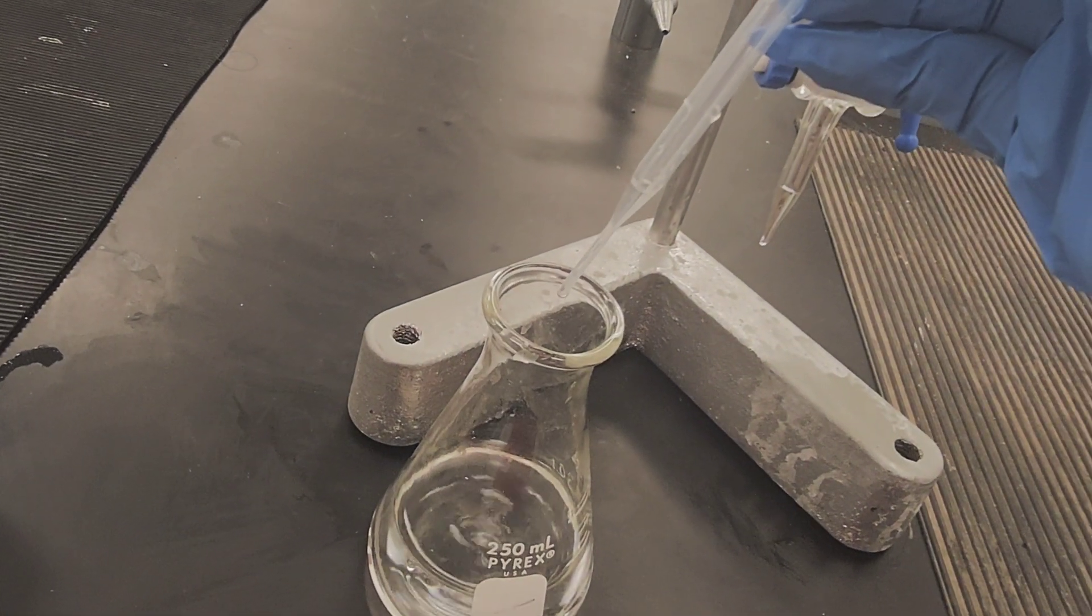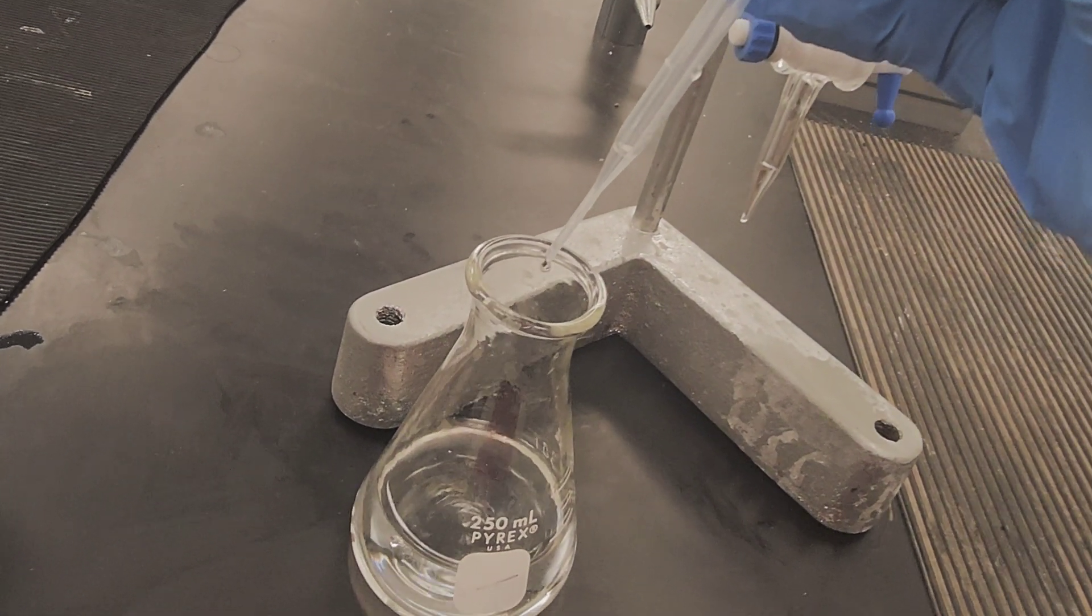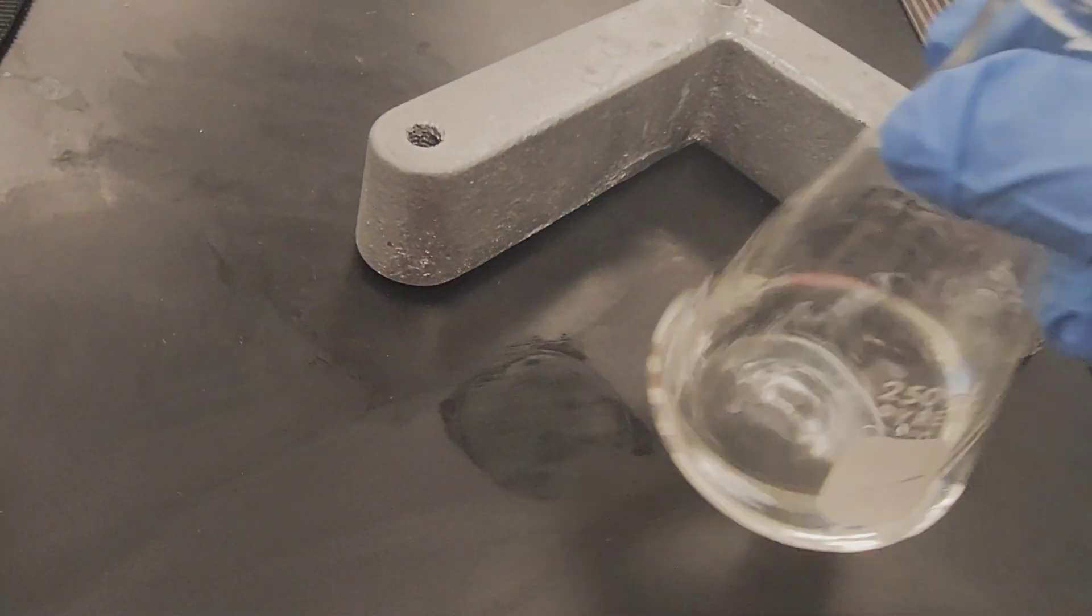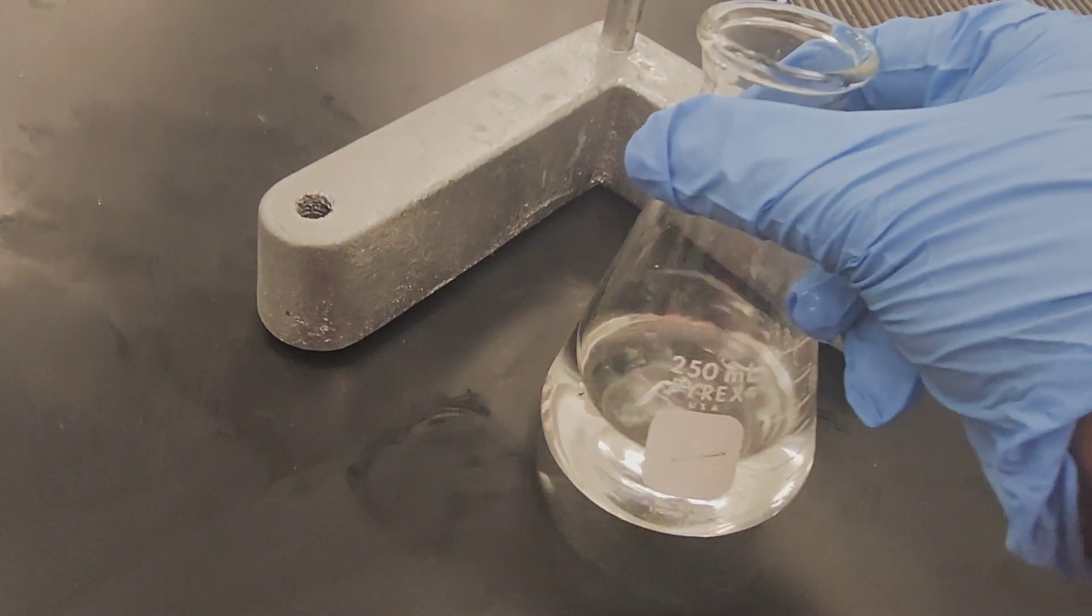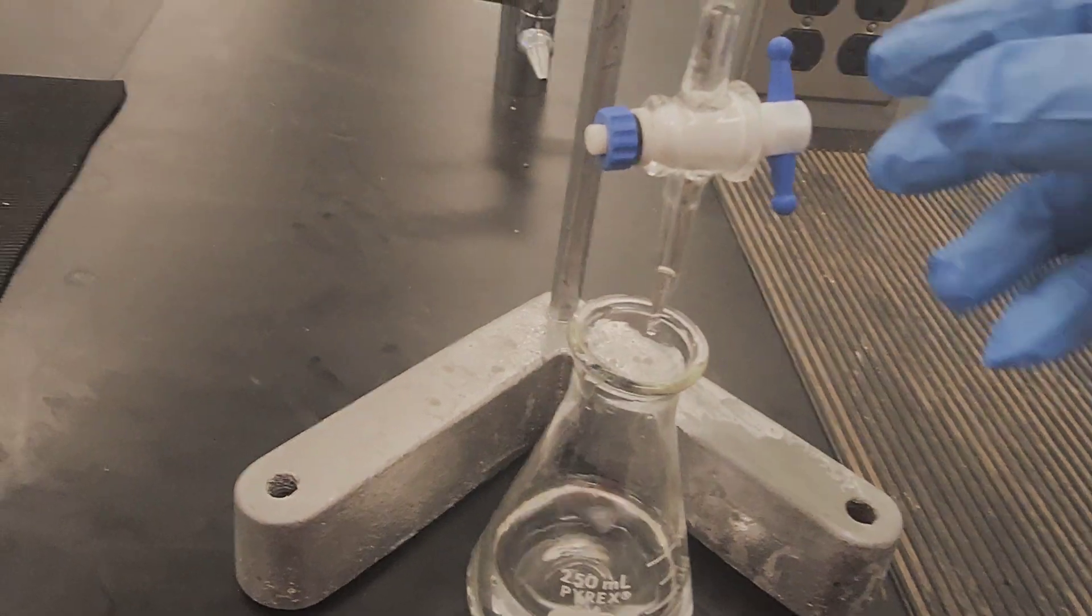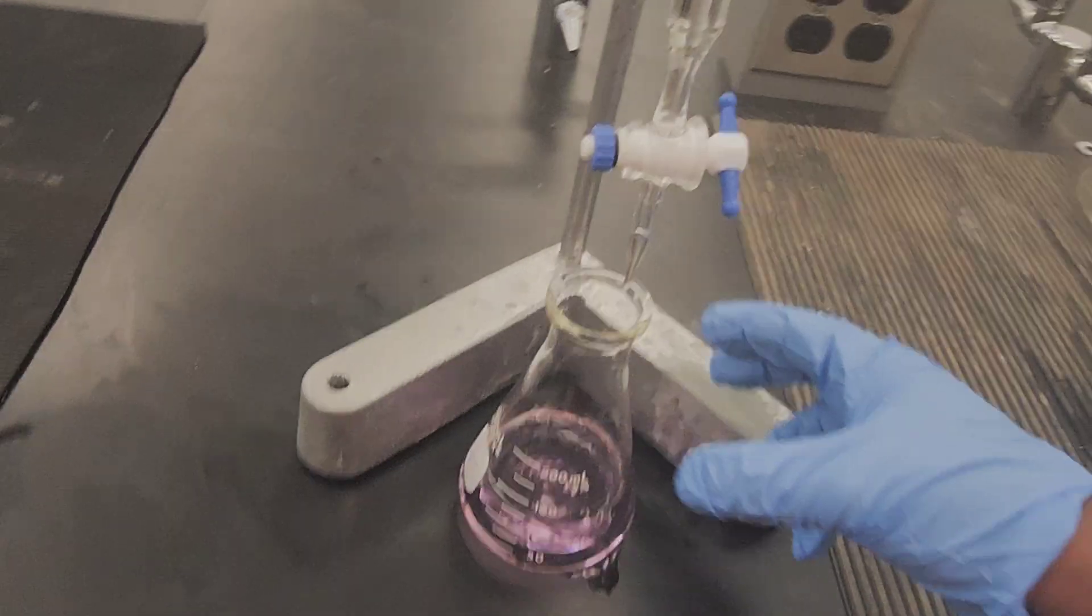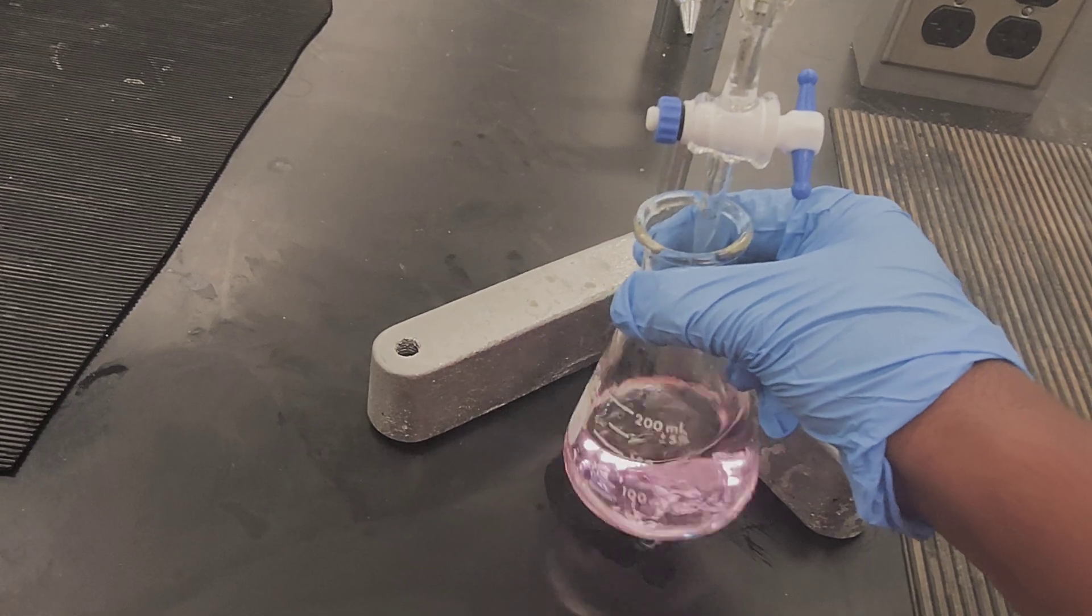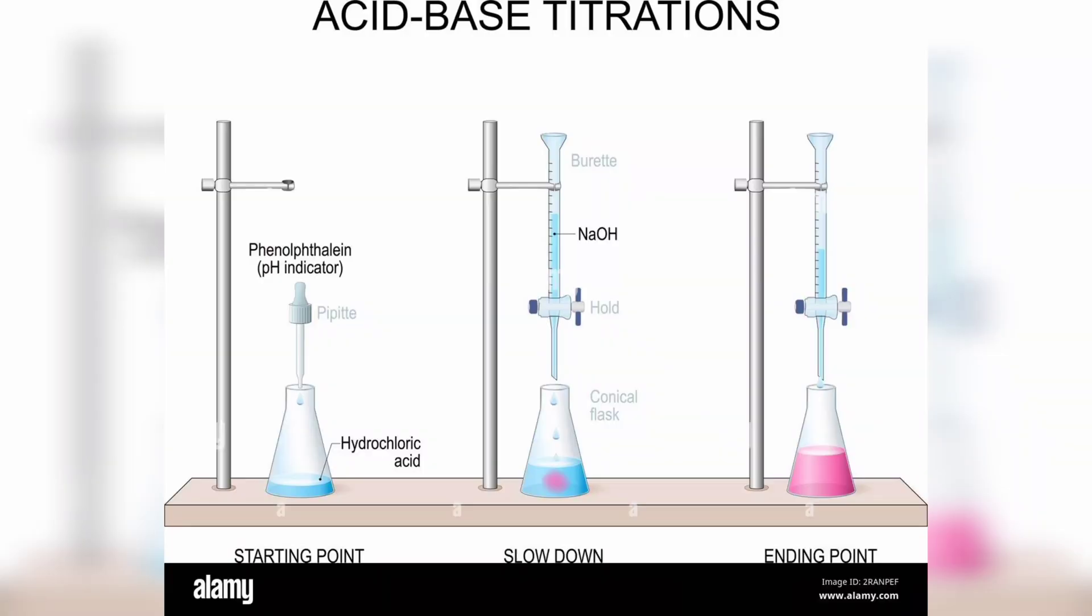Once we turn on the flow of 1 molar sodium hydroxide, the color starts changing to pink, and the color change indicates the endpoint of titration.